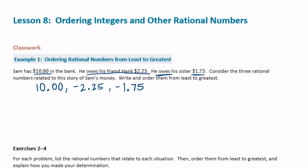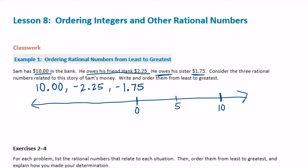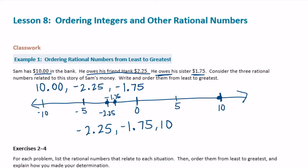Now we need to order those from least to greatest. If we were to put it on a number line, we'd have 0, then 10 somewhere to the right, negative 5, negative 10. Negative 2 and 25 hundredths would be in the middle, and negative 1 and 75 hundredths would be around there. So from least to greatest: negative 2 and 25 hundredths, then negative 1 and 75 hundredths, and lastly 10. So there's our order.